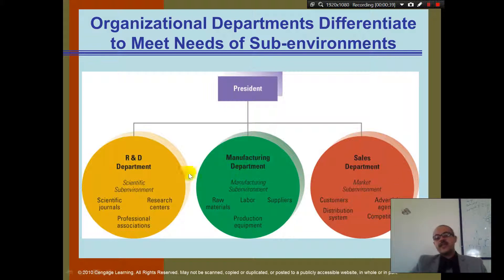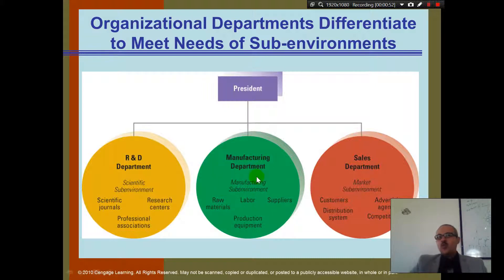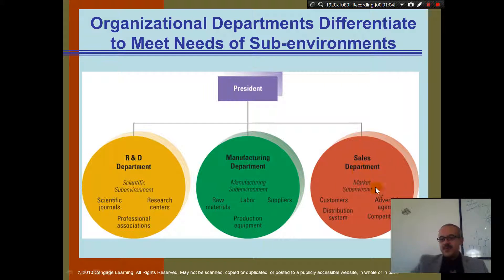Which of those three departments is very organic? R&D — these people have to come up with a new product. Which is very mechanistic? Maybe manufacturing — one plus one equals two: get the raw material, make the production, send it to labor to work on it. What about sales? Maybe it's in between — advertising is more organic and distribution is more mechanistic.